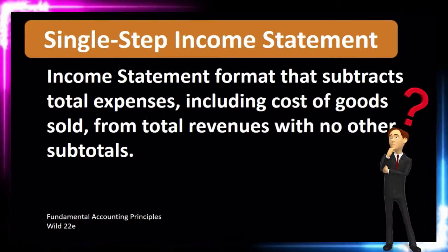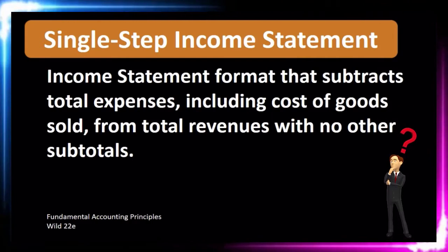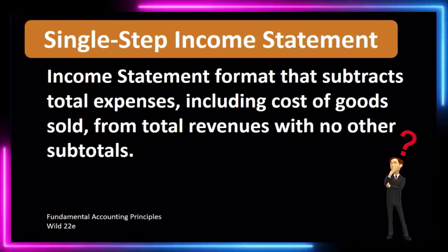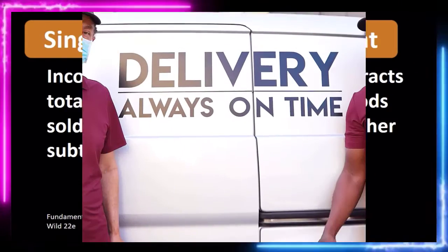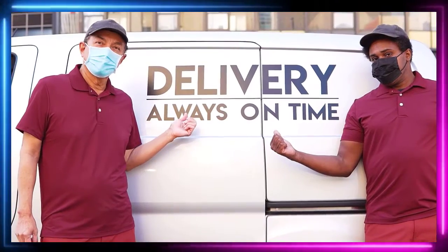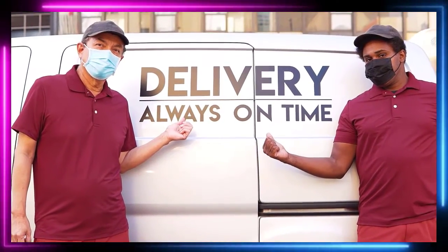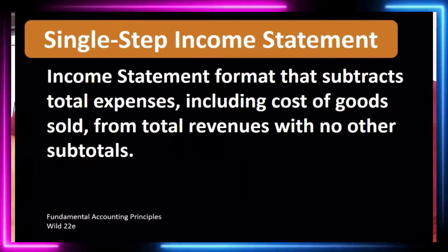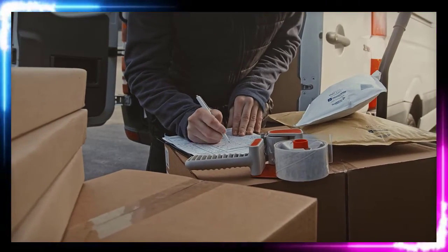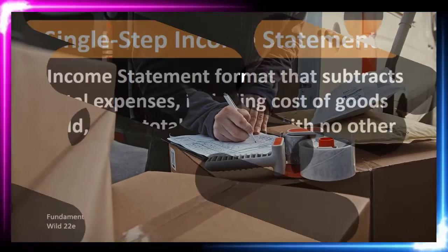When we think about a single-step income statement, we can contrast that from a multi-step income statement. Single-step income statements are often used by service companies that do not have inventory and therefore don't have cost of goods sold. Multi-step income statements are often used by companies that have inventory, whether merchandising or manufacturing, who do have cost of goods sold and may have more use for additional subtotals of expenses.